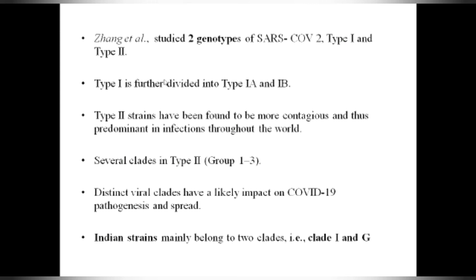Zhang et al. studied two genotypes of SARS-CoV-2 — type 1 and type 2. Type 1 is further divided into type 1A and type 1B. Type 2 strain is more contagious and predominant in infections throughout the world. Type 2 is further divided into clades, and three distinct viral clades have a likely impact on COVID-19 pathogenesis. Importantly, Indian strains mainly belong to two clades — clade I and clade G — which is a very important fact and a likely future exam question.